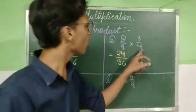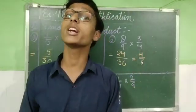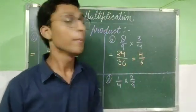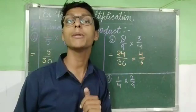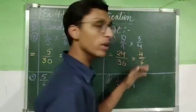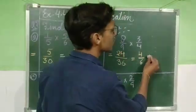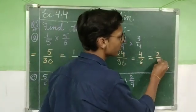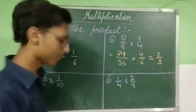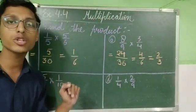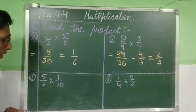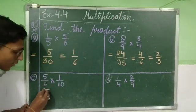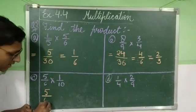We can divide both by 6: 6 fours are 24 and 6 sixes are 36, giving 4/6. That 4/6 can be simplified further by 2: 2 twos are 4 and 2 threes are 6, giving 2/3. Alternatively we could have divided directly by 12. Part C: 5/6 into 1/10. 5 ones are 5 and 6 tens are 60, giving 5/60. Dividing by 5 gives 1/12.